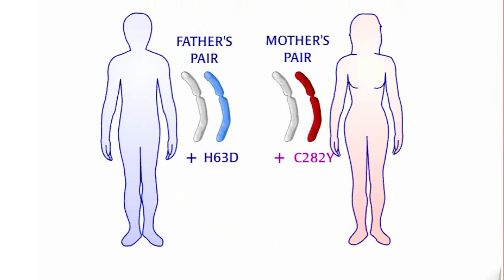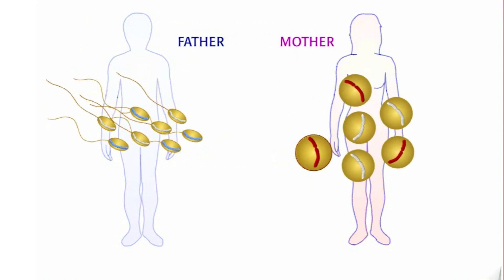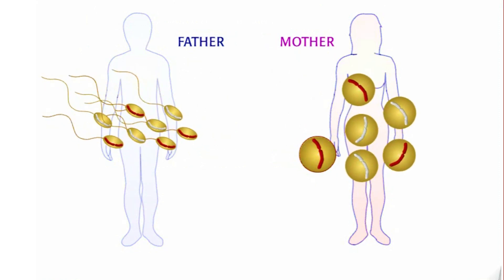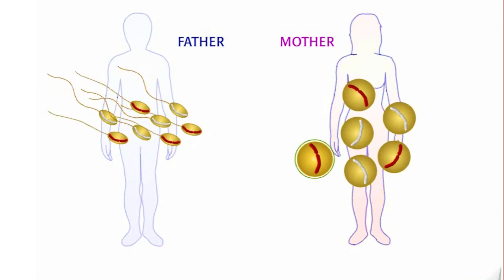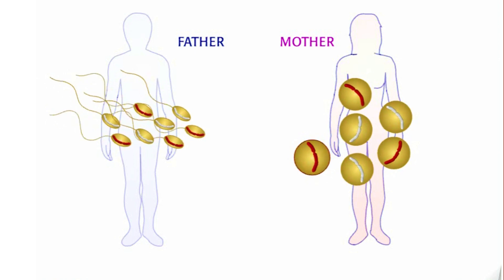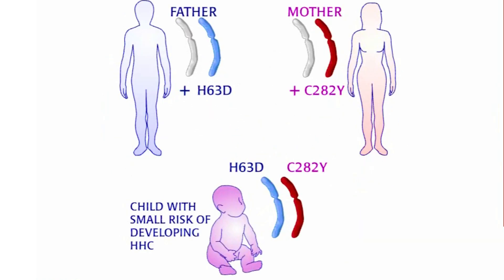In a few cases, a person has hemochromatosis but only has one C282Y gene. The other gene they have is frequently the H63D version of HFE. The inheritance works the same way as before except one parent has the H63D version and the other has at least one C282Y version.